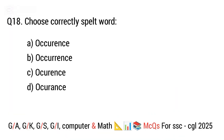Question 18. Choose the correctly spelled word. The right answer is option B. Acquaintance.